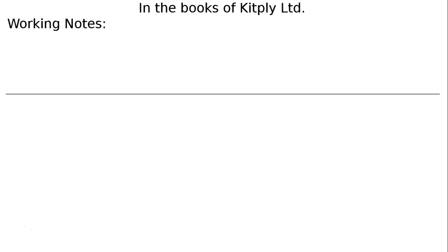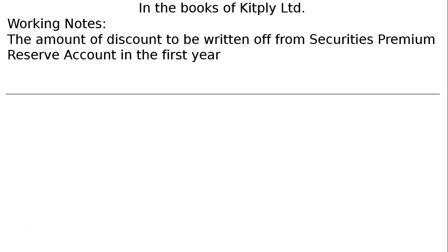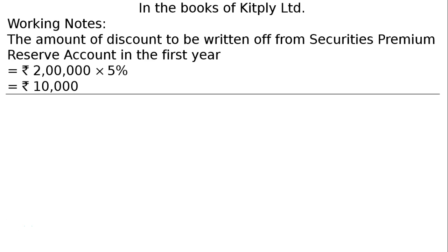In the books of Kitply Limited. Working notes: the amount of discount to be written off from securities premium reserve account in the first year is equal to Rs. 2 lakh at the rate of 5%, which is Rs. 10,000.